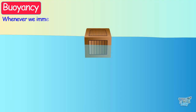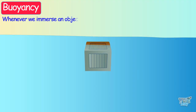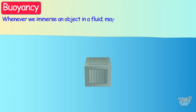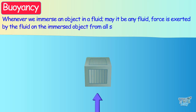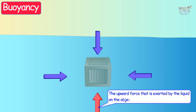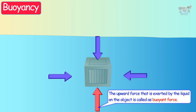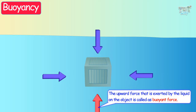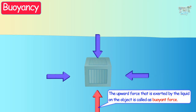Whenever we immerse an object in a fluid — it may be any fluid — the force exerted by the fluid on the immersed object is from all sides. But the upward force that is exerted by the liquid on the object is called buoyant force, and this buoyant force decides whether the object will float or sink.